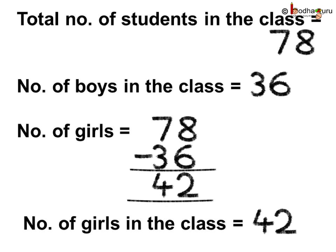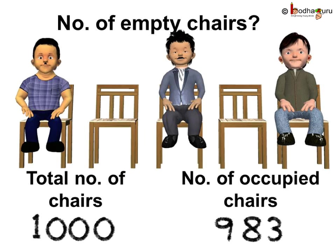Let us see again how we solved this problem. The number of students in the class is equal to 78. The number of boys in the class is equal to 36. The number of girls is 78 minus 36, which is 42. Thus the total number of girls in the class is 42.